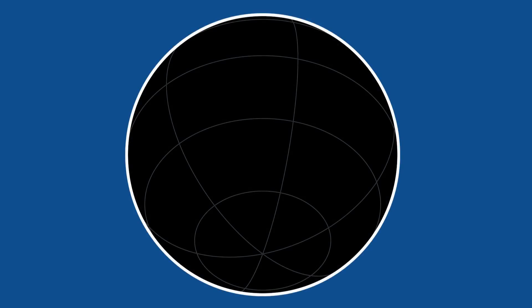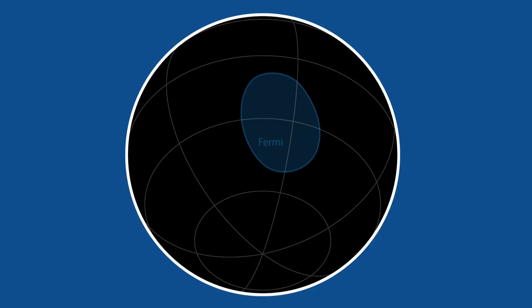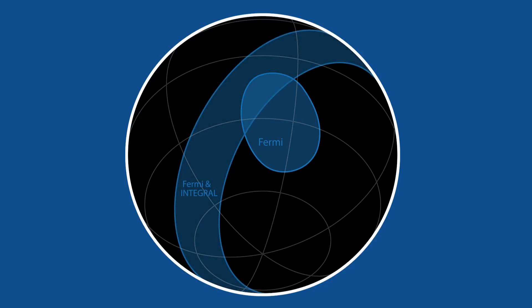The Fermi data indicated the burst came somewhere from a patch of sky covering about 1,200 square degrees, an area equivalent to 6,000 full moons. Adding information from an independent gamma ray detection from the Integral satellite, the search area was further reduced. The LIGO observatories placed the source somewhere in long narrow strips of the sky, one of which overlapped with the target patch.